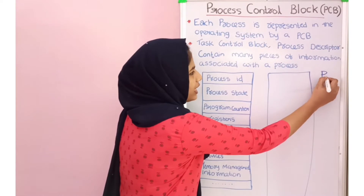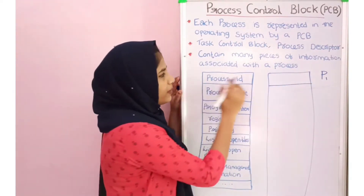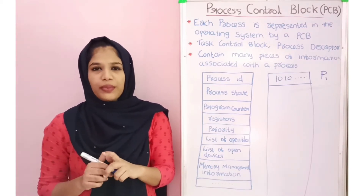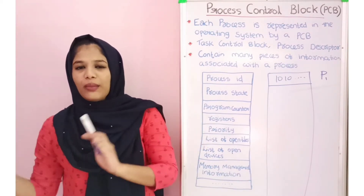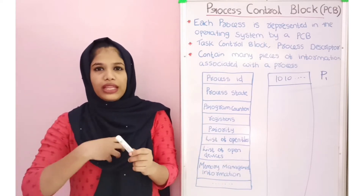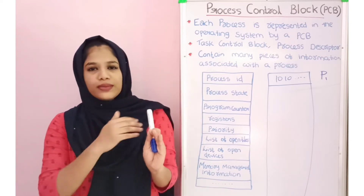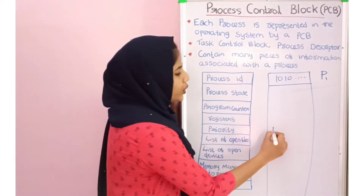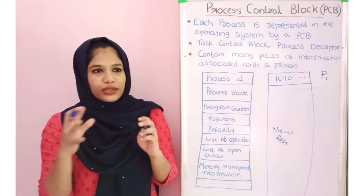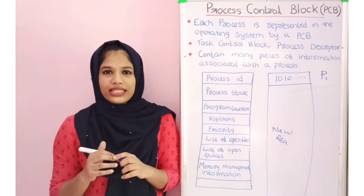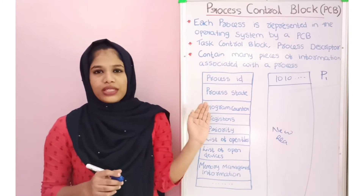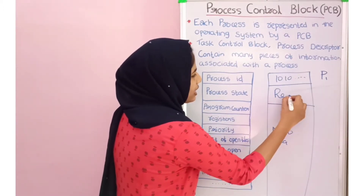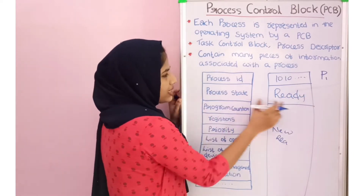The next field is the process state. When a process is created, it goes through a state plan. That process may be in a ready state, a running state, or a waiting state. The process state indicates what stage the process is currently in — for example, ready or denied (terminated).